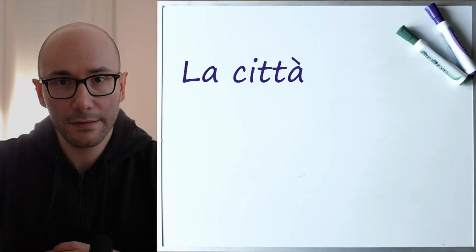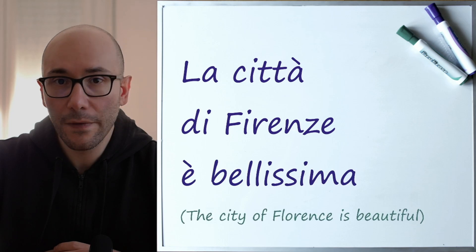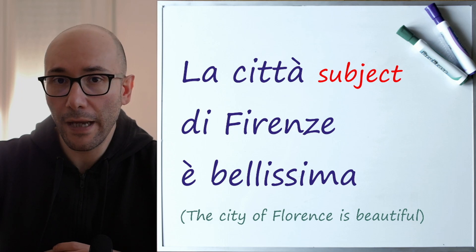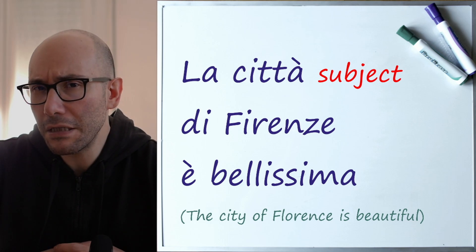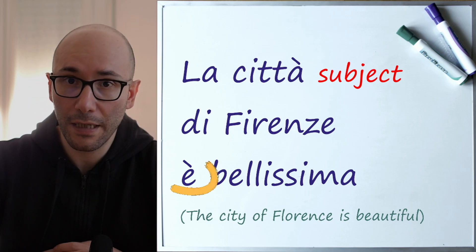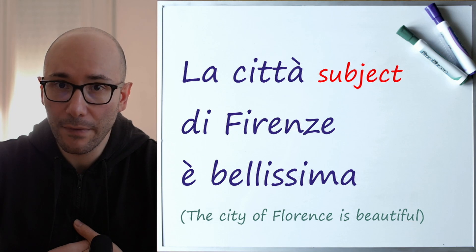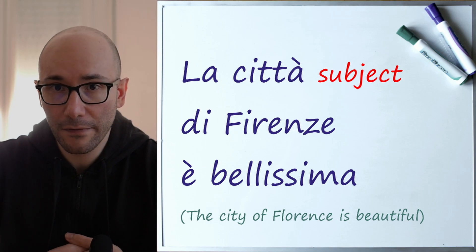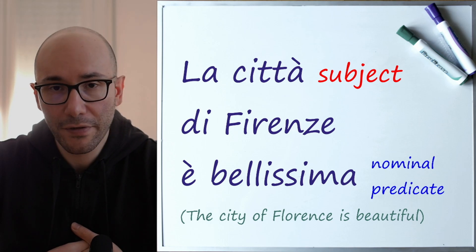La città di Firenze è bellissima. The city — la città — is the subject. Then we must spot the predicate. It is easy: is, è. The verb to be is the predicate. Beautiful — bellissima. So, verb to be plus an adjective is a nominal predicate. Pretty straightforward.